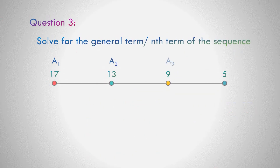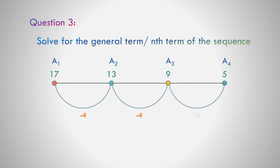Question number 3: In the sequence 17, 13, 9, and 5 — what do you think is the pattern? Correct. The pattern is minus 4, so the number to be subtracted is equal to negative 4. Let us write the formula: a sub n equals negative 4n.